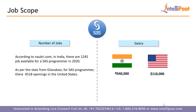For SAS programming: according to Naukri.com, in India there are 1,000–4,500 jobs available for a SAS programmer in 2020, and according to Glassdoor there are 4,518 openings in the United States. The average salary for a SAS programmer is close to ₹5,40,000 per year in India, and in the United States it is approximately $1,10,000 per year.